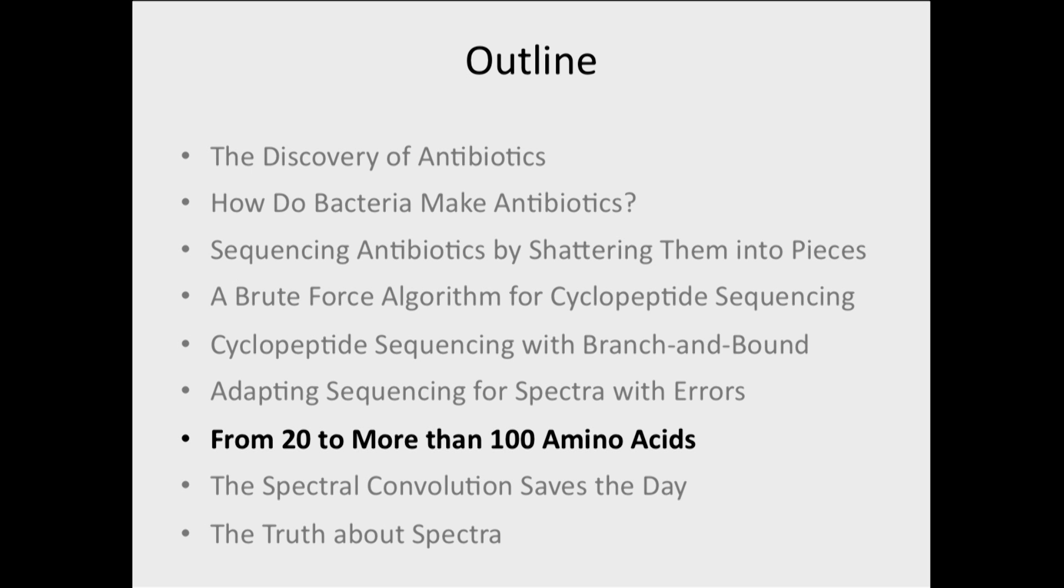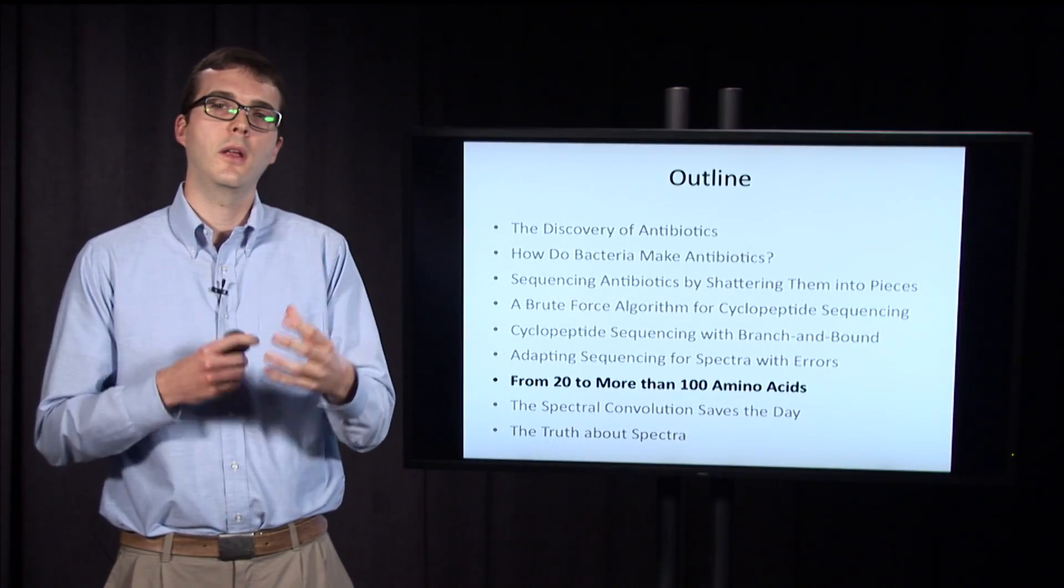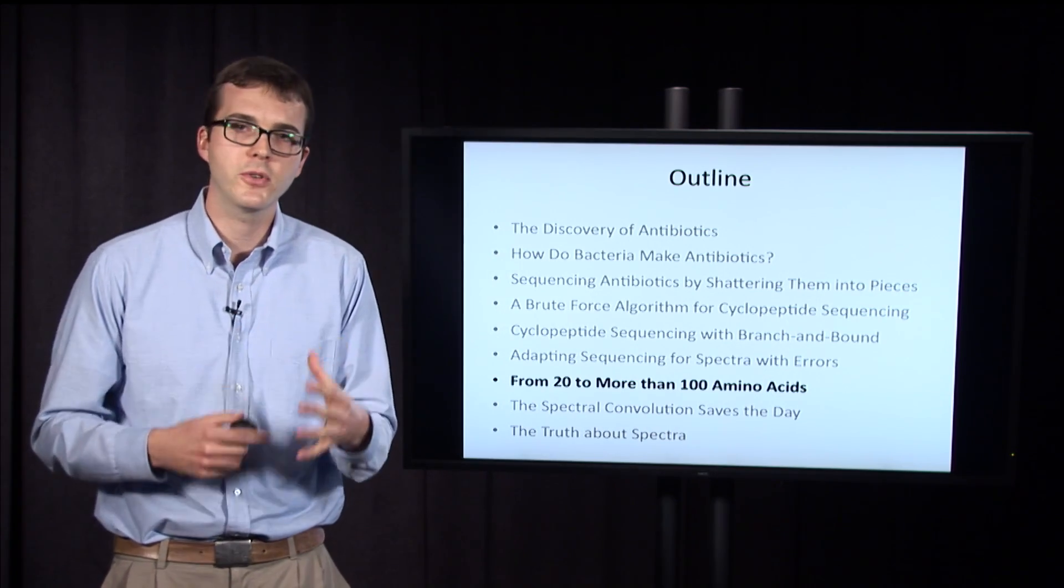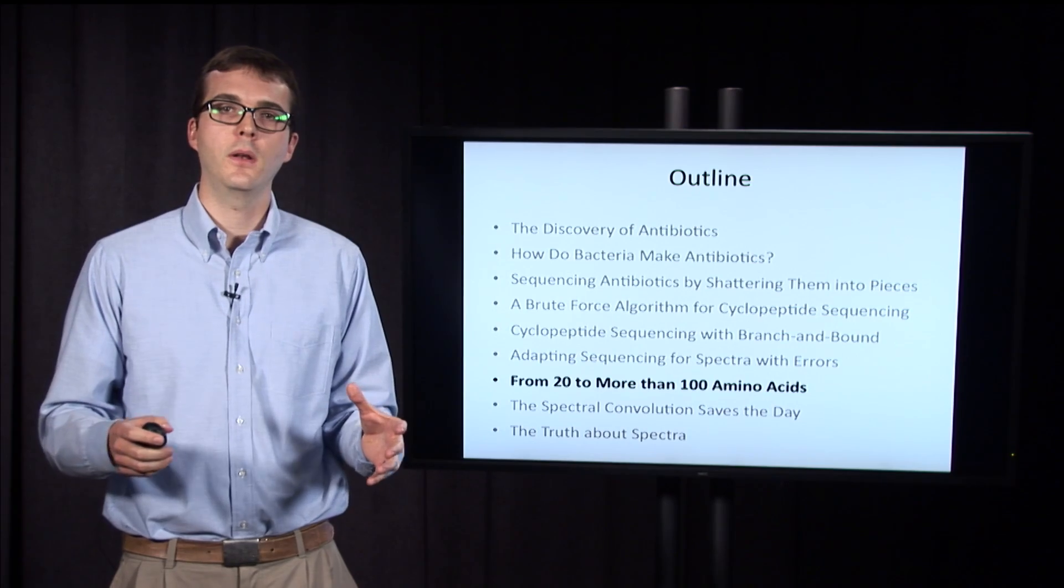In the last section we saw that our new algorithm, based on the leaderboard and cut method, worked well on a spectrum that was close to the correct theoretical spectrum, but once we had 25% false and missing masses, it didn't reconstruct the correct tyrosidine B1 peptide.